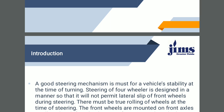The steering of a four-wheel vehicle is designed in a manner so that it will not permit lateral slip of front wheels during steering. There must be true rolling of wheels at the time of steering. The steering system provides the change in direction of motion of vehicles. This is achieved by converting the rotary motion imparted to the steering wheel by the driver into angular turns of the front wheels.